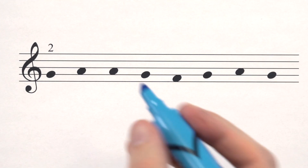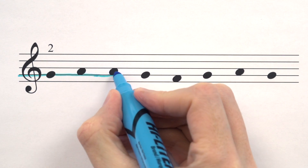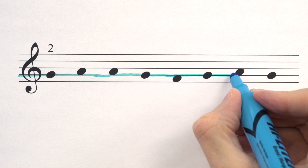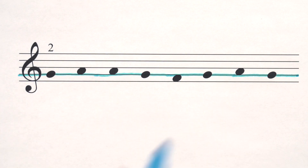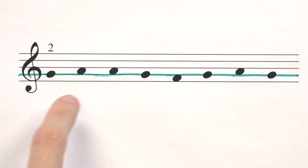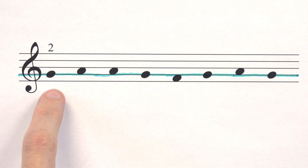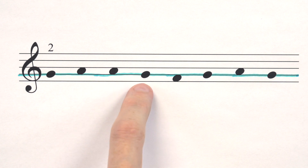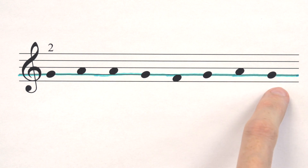Here's our next example. I'm going to go ahead and color the G line, which you can also do in your music as you're getting used to finding that G line. Eventually you'll just recognize where it is. Let's point and say how the notes are moving — whether they're stepping up, stepping down, or repeating. Say 'start' for the first note with me: start, step up, repeat, step down, step down, step up, step up, step down.